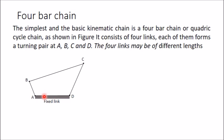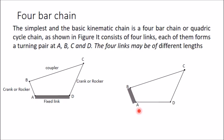If I fix AD, you will get one inversion of this four-bar chain. This fixed link's opposite link in the four-bar chain is called the coupler. The other two links are called either crank or rocker, depending on whether they can have complete rotational motion. If AB can rotate completely, it is called a crank; otherwise, if it only oscillates, it is called a rocker or lever.